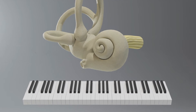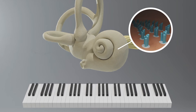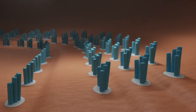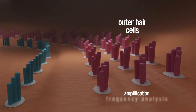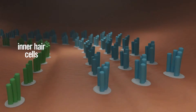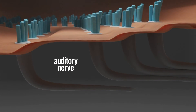The cochlea plays an important role in hearing by amplifying soft sounds as well as separating all the different pitches or frequencies of sounds. It's like a piano, but with even more keys. The cochlea also sends messages about sounds to the brain by activating the auditory nerve. There are many different types of cells in the cochlea, but two are very important for hearing: the outer hair cells, which are responsible for amplification and frequency analysis of sounds, and the inner hair cells, which are the cells that communicate with the auditory nerve and ultimately the brain.